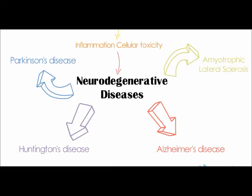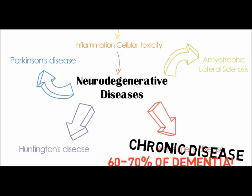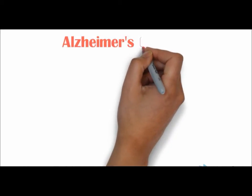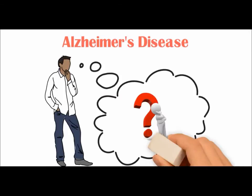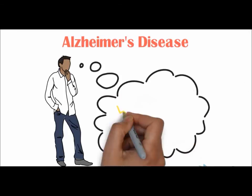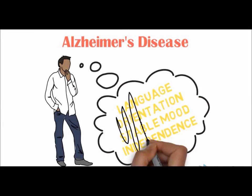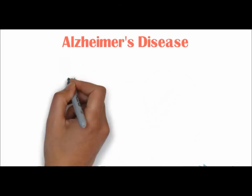Alzheimer's disease is a chronic neurodegenerative disease that progresses slowly but worsens over time. This disease accounts for 60–70% of dementia cases and commonly begins in people over 65 years of age. In early stages, patients have trouble remembering recent events, also known as short-term memory loss. As the disease progresses, patients might face difficulties in language, orientation, heavy mood swings, as well as caring for themselves. Pathologically, Alzheimer's is characterized by the formation of neurofibrillary tangles and amyloid plaques comprising of modified tau and amyloid beta protein, respectively.